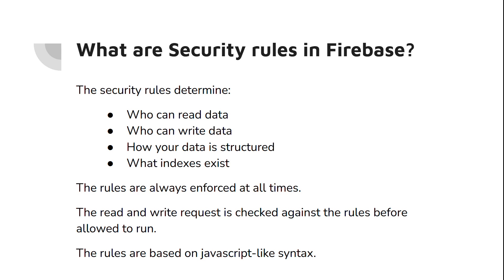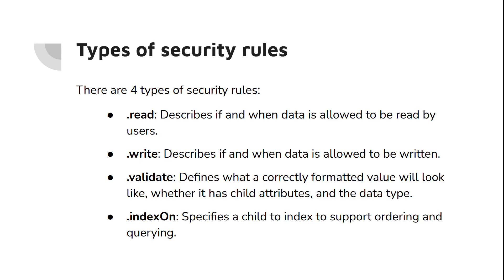The language of these rules is based on JavaScript-like syntax. We have four types of security rules. First, .read — you can specify who can read the data. Second, .write — it describes if and when the data is allowed to be written. Third, .validate — it defines what a correctly formatted value looks like, whether it has child attributes and the data type. Fourth, .indexOn — it specifies which child to index when you have ordering in your query.